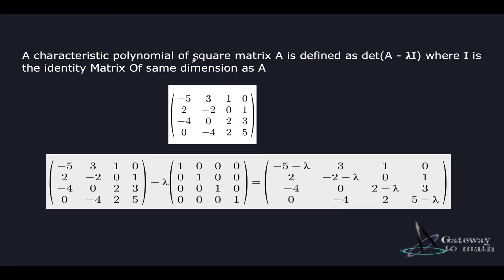A characteristic polynomial of a square matrix A is defined as the determinant of A minus lambda times I, where I is the identity matrix of the same dimension as A. This equation should not be unfamiliar. If you're not sure how we arrived at it, you can refer to my previous video — I'll link the URL in the description. Finding the characteristic polynomial of a matrix means solving for the determinant of A minus lambda times I.